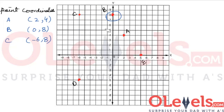Now let's look at point D. Point D is this point right here. We can observe that it has an x value of minus 6 and a y value of minus 5. So the coordinates of point D are (minus 6, minus 5).